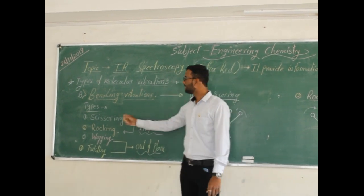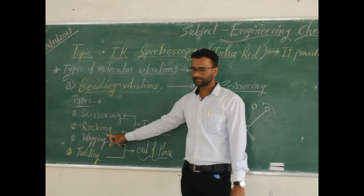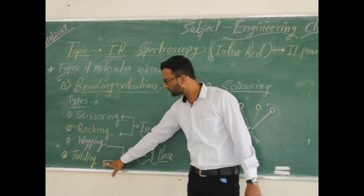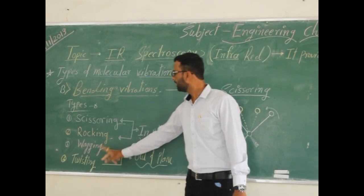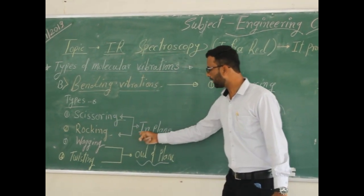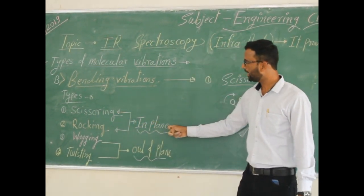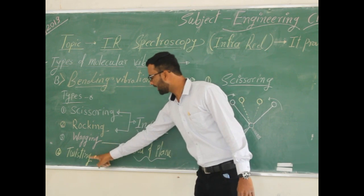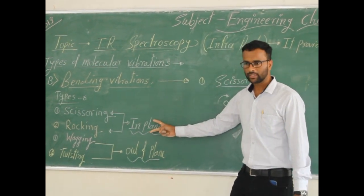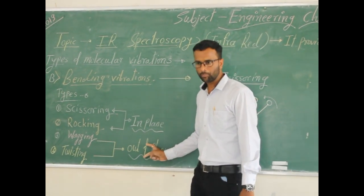Bending vibrations are classified into four types: scissoring, rocking, wagging, and twisting. Scissoring and rocking take place in the plane — these two vibrations take place in the plane. While wagging and twisting take place out of the plane. So the first two are in-plane, and the last two are out-of-plane.